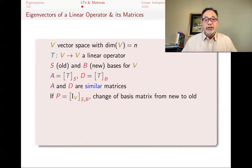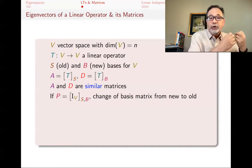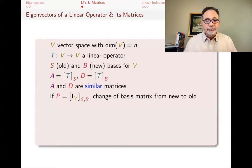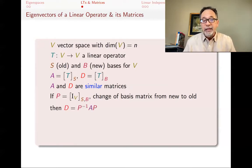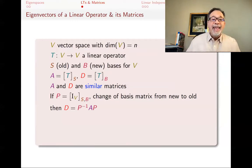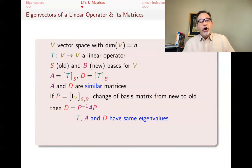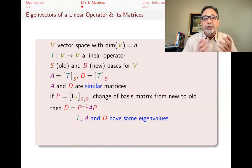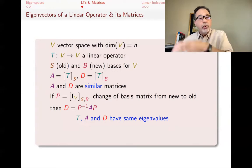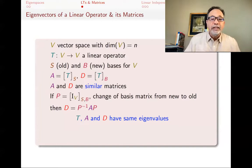These two matrices A and D could look very different, but they are called similar matrices and share similar properties. In particular, T, A, and D all have the same eigenvalues. This follows from what a matrix of a linear transformation does: it performs the job of the transformation on coordinates. So if lambda is an eigenvalue for T with a corresponding eigenvector, the same eigenvalue holds for A and D.